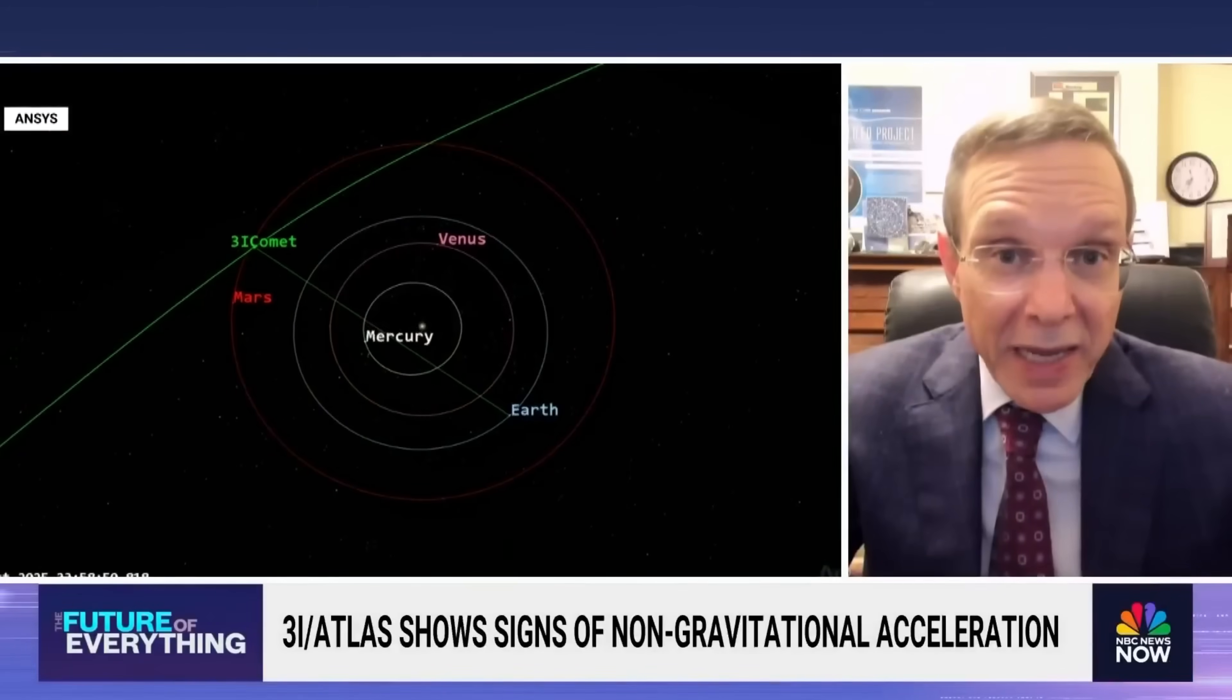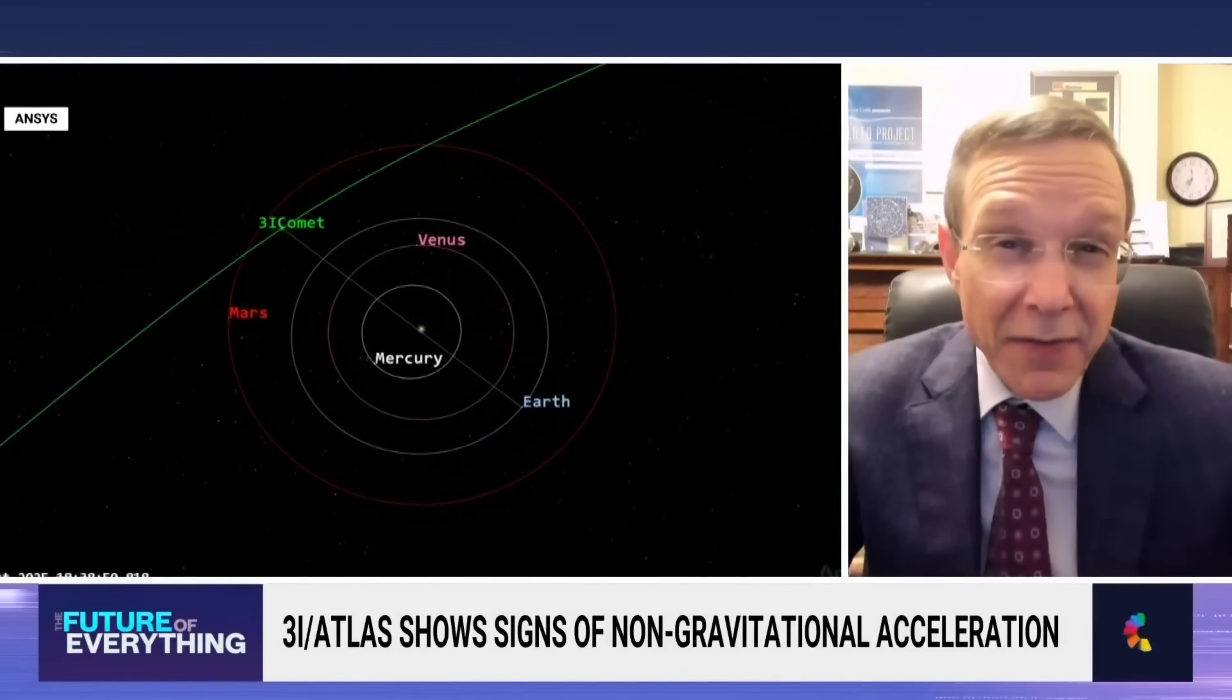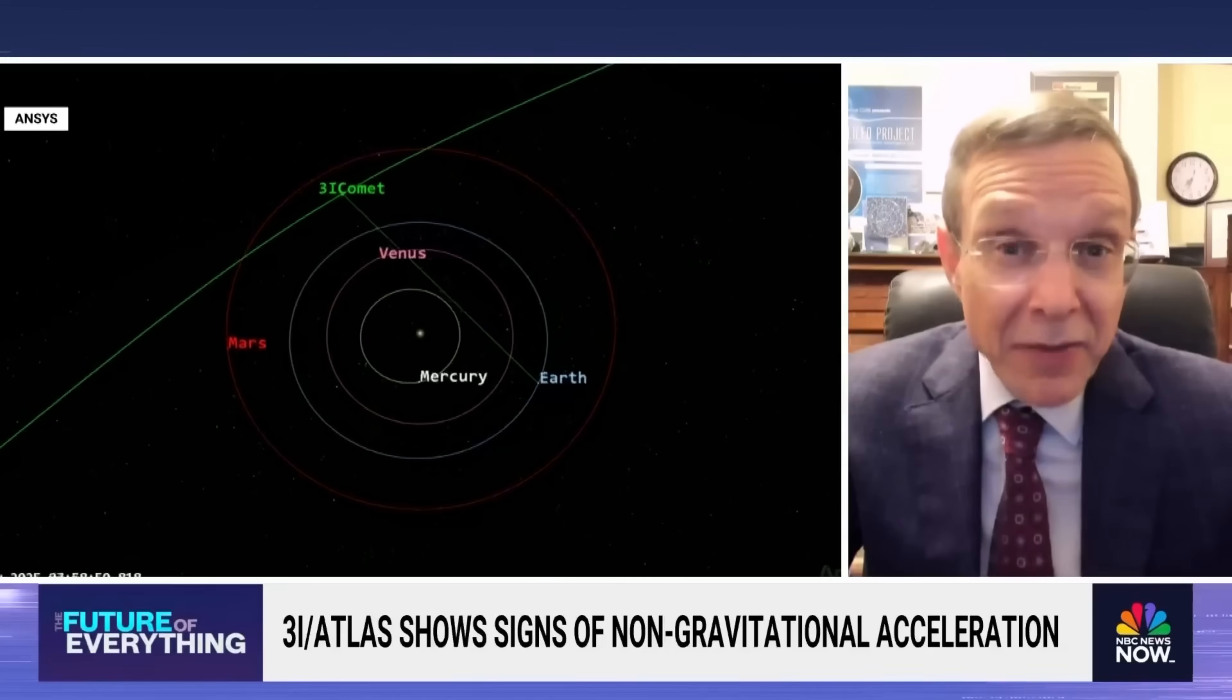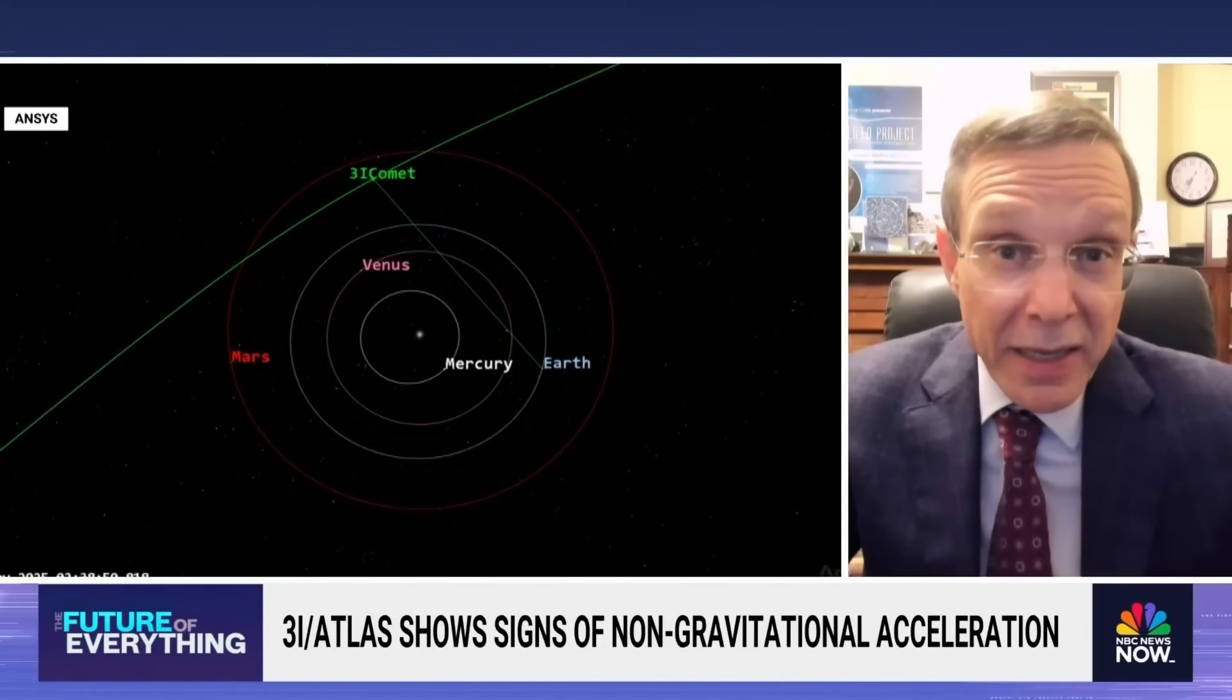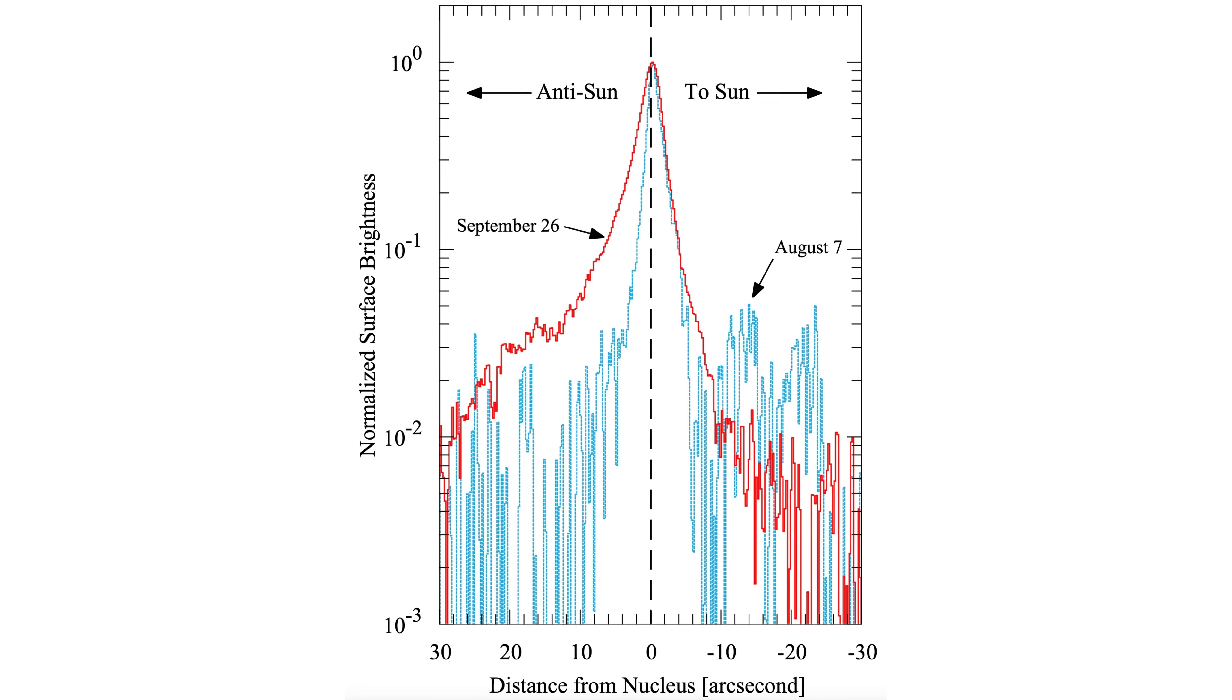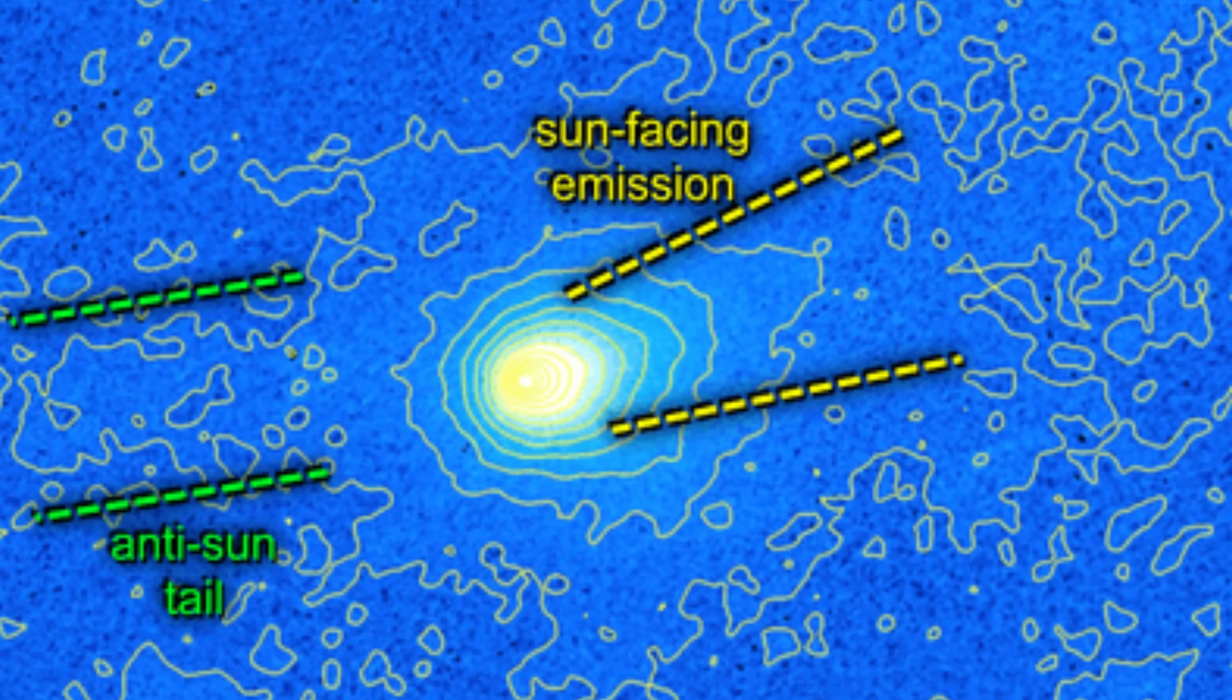His model estimated that by late November the swarm would lie roughly 60,000 kilometers ahead of the nucleus. When the new anti-tail measurement aligned almost exactly with that forecast, theoretical discussions shifted.